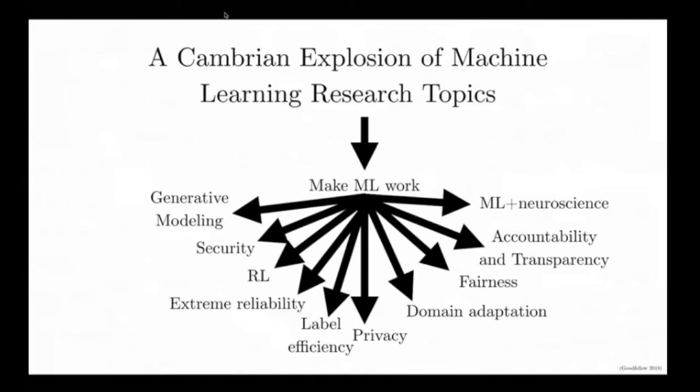Machine learning research today is much more complicated than it was even just five years ago. Among people working in machine learning for the purpose of developing artificial intelligence, there was really only one goal until about five years ago, and that goal was just to get machine learning working. There were other versions of machine learning in other applications where it really did work, but those applications were usually not what we would consider AI complete — things like understanding which objects are in an image or recognizing text from speech — and those tasks weren't really working yet.